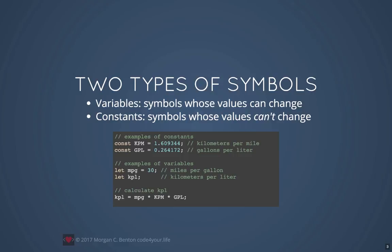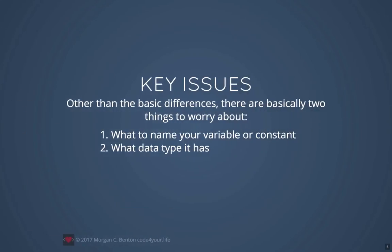At the bottom you can see the formula we used to convert miles per gallon into kilometers per liter. There are basically two issues you need to worry about when you're thinking about symbols — in other words, variables and constants. The second one is what data type your variable has.